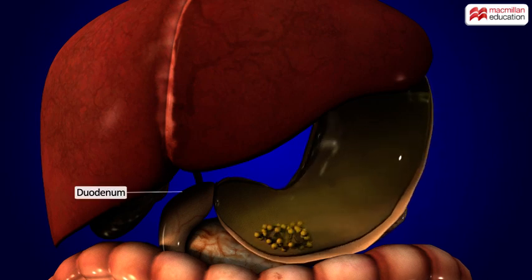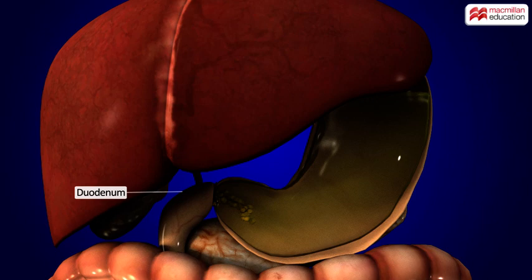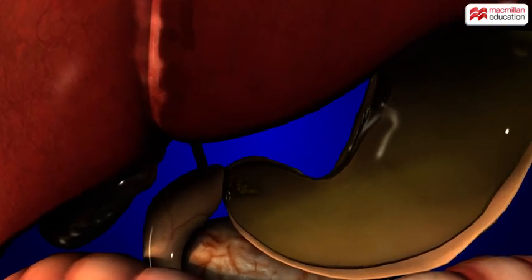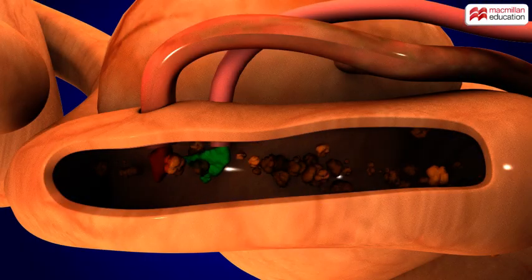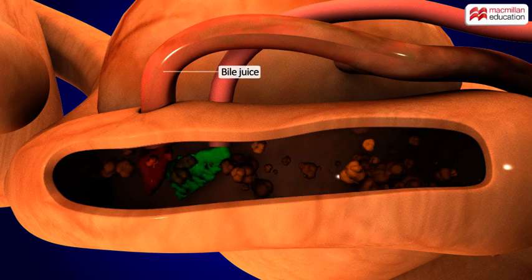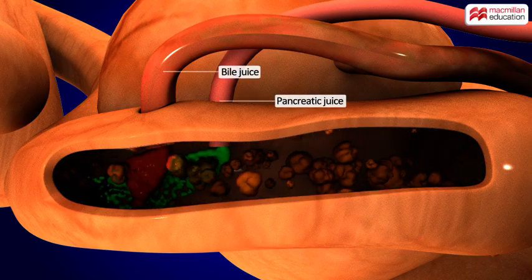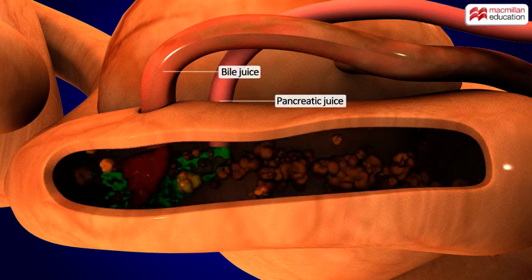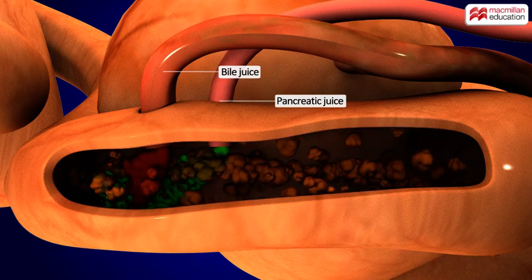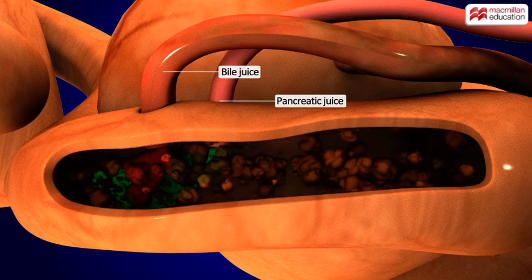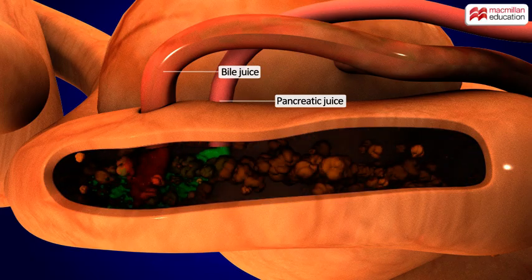Chyme then enters a part of the small intestine known as the duodenum. Here, the bile juice from the gallbladder and pancreatic juice from the pancreas acts upon the chyme and further breaks it down.